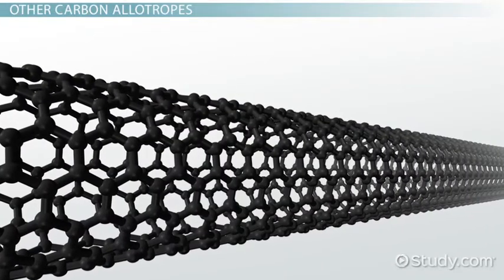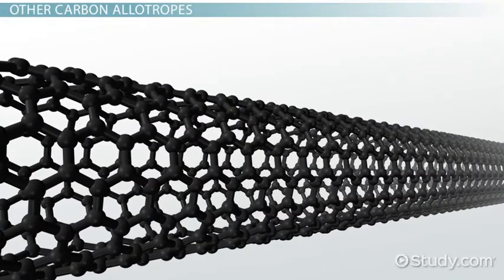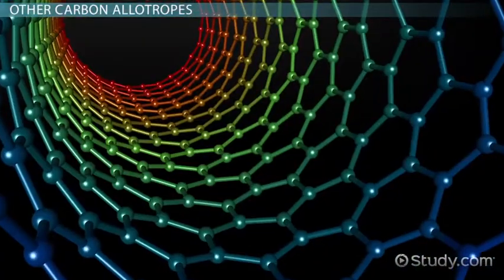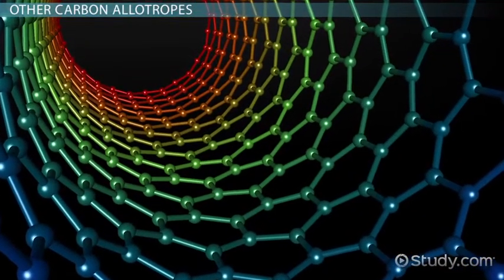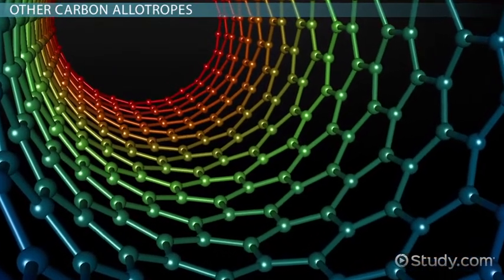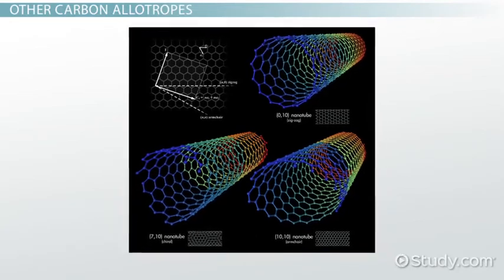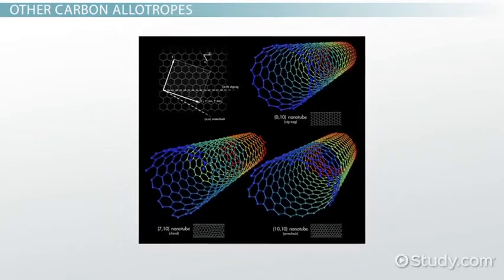When graphene is rolled into a tube, it produces another allotrope of carbon known as a carbon nanotube. Nanotubes exhibit many different properties depending on how they are rolled together and the interactions between the carbon atoms. It is a growing field of research and has important implications for scientists and engineers alike.